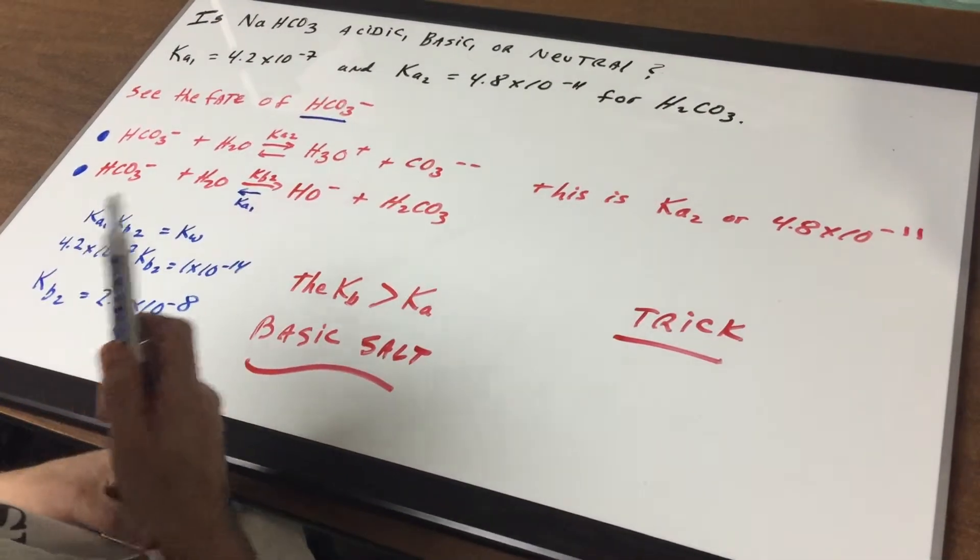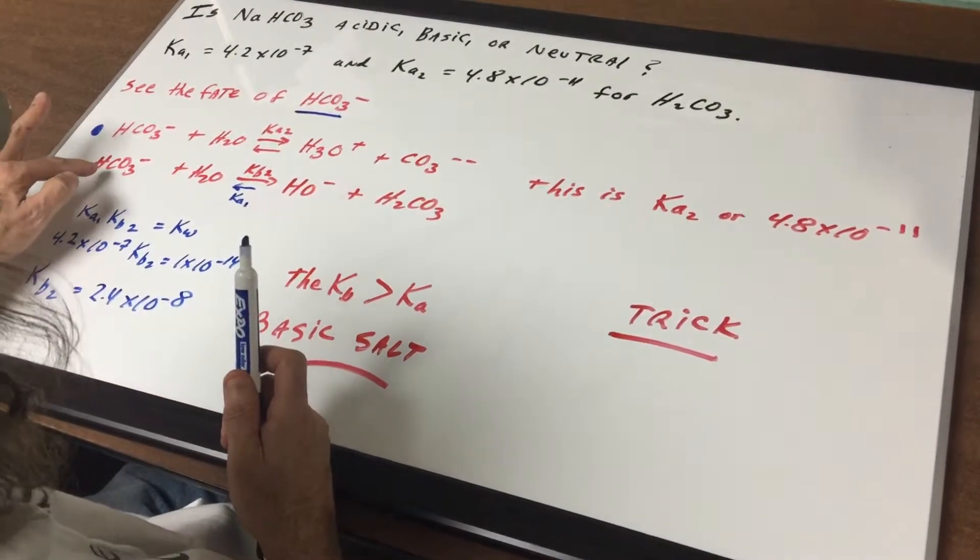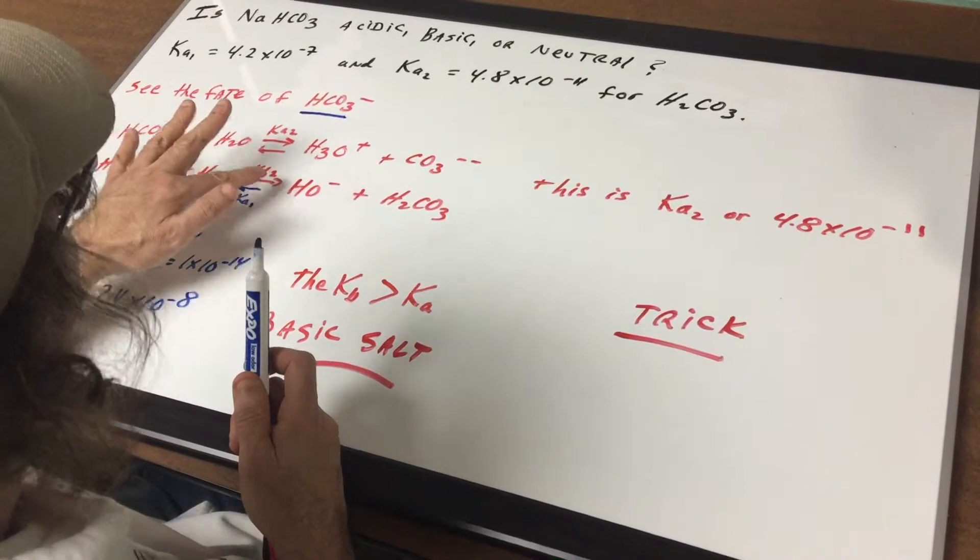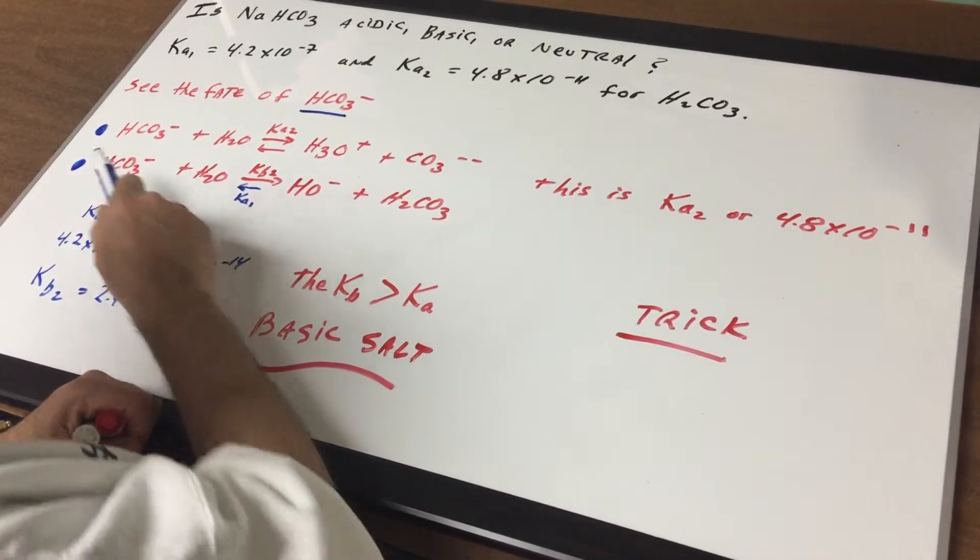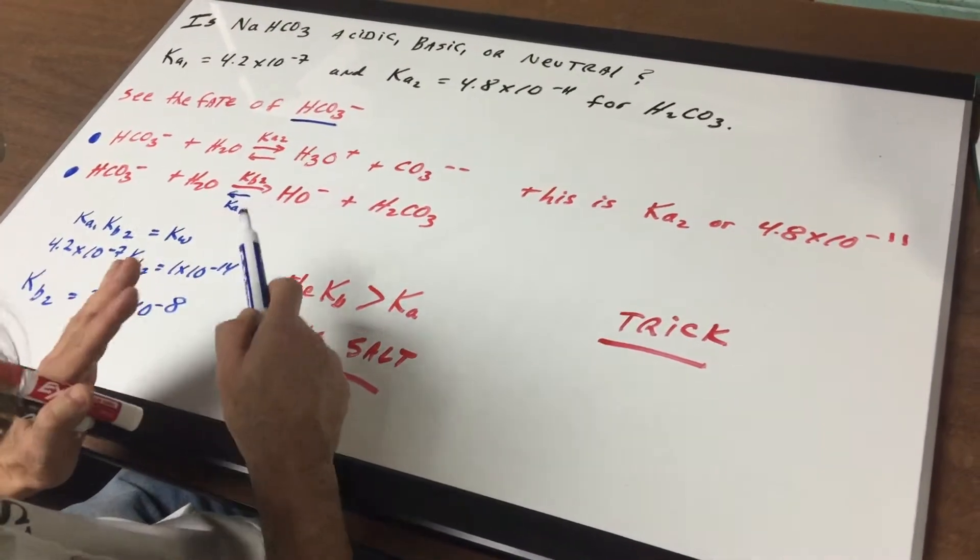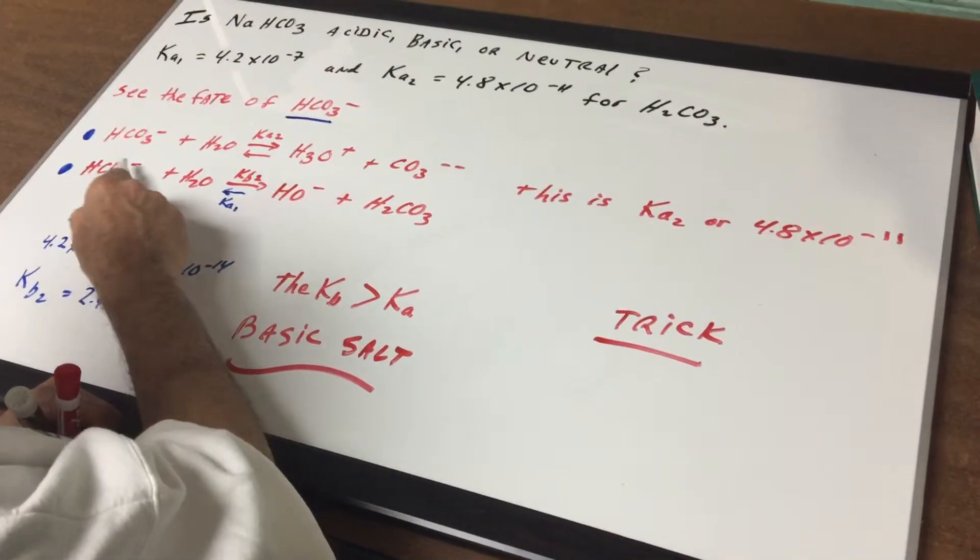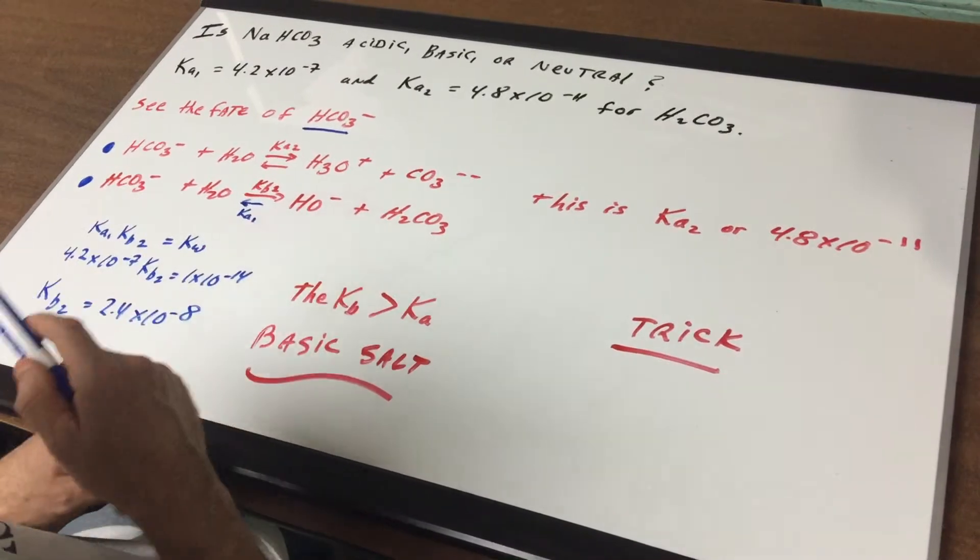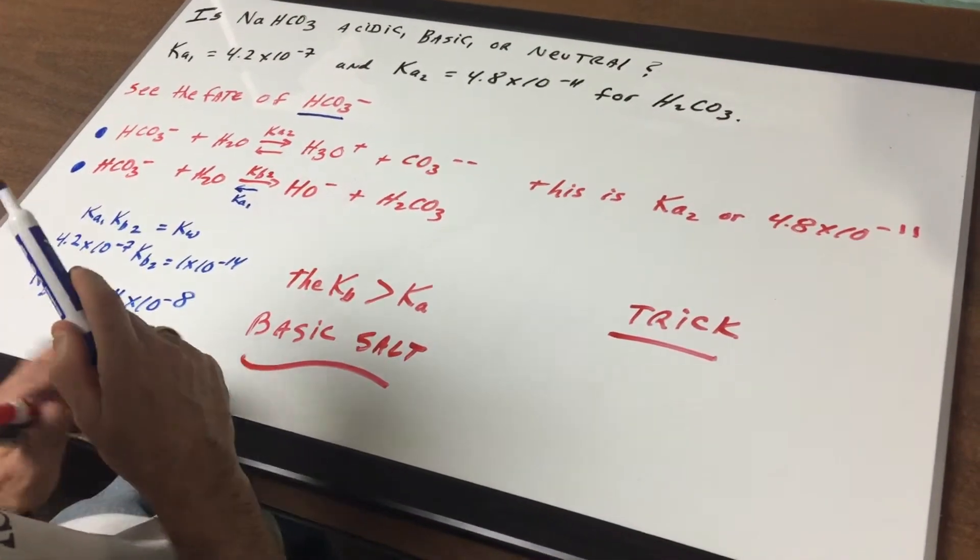Now what would that step be? Well as you can see, this would represent the KB2, meaning the second basic step. So if you have HCO3 minus and it takes off this final H, this represents KB2.